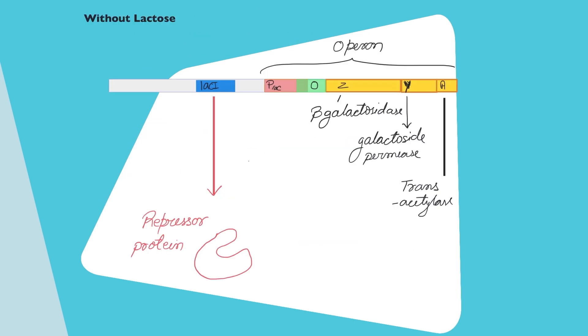Just to summarize and recapitulate everything that we have covered so far, we have three genes A, Y, and Z, each giving a functional enzyme. If there is no lactose, LAC-I is going to produce a repressor protein. The repressor protein will bind to the operator region and will inhibit working of RNA polymerase.